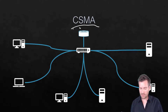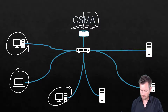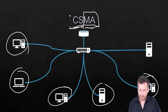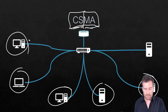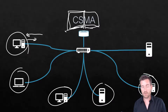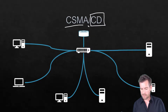CSMA stands for Carrier Sense Multiple Access. Multiple Access simply means the network is being accessed by multiple devices. Carrier Sense means that before a device decides to speak, it listens — it senses to see if any other device is already talking on the line. It will only communicate if it senses that no other communication is happening at that time.